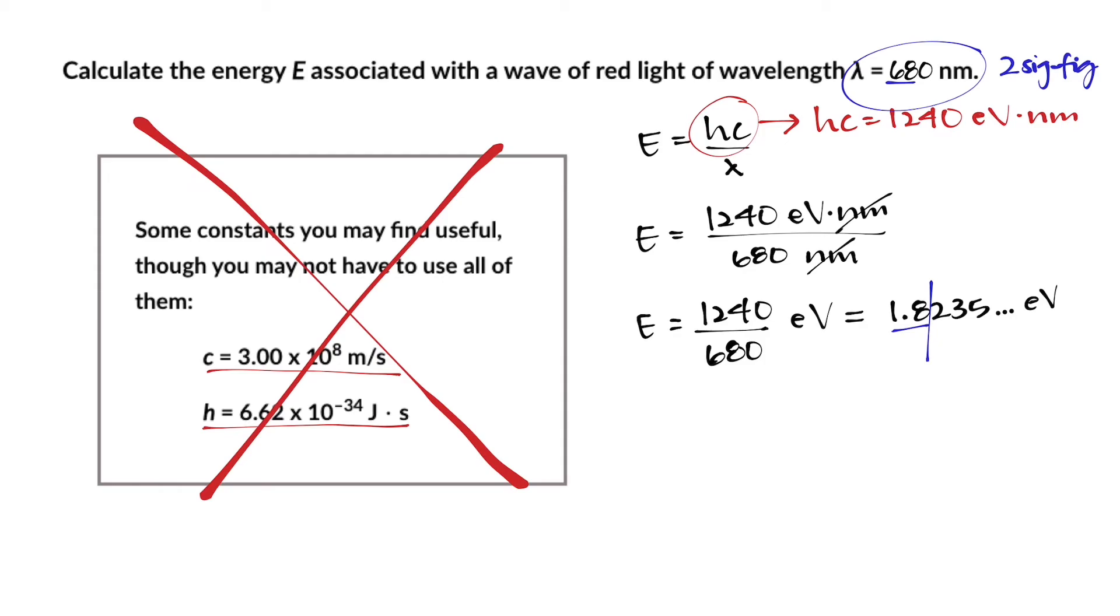In order for us to determine if we're leaving this number as 1.8 electron volts or if we need to round it up or down, we'll look at the next number immediately following that cutoff point and with that number being a 2 we're just going to leave 1.8 as 1.8.